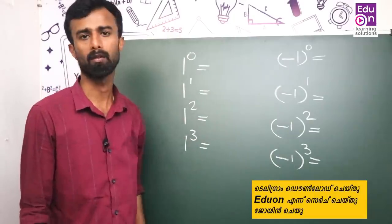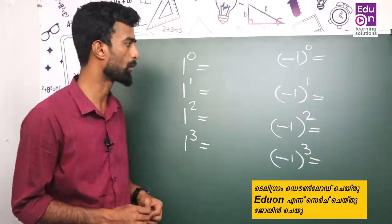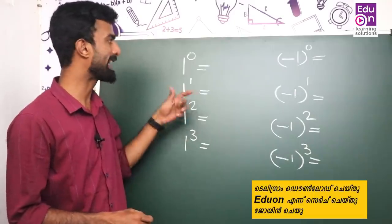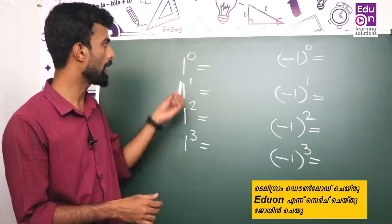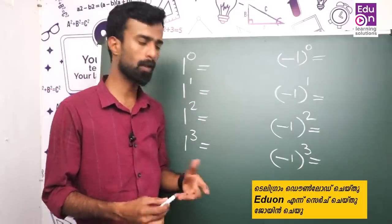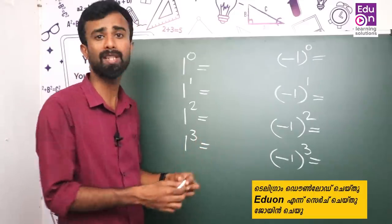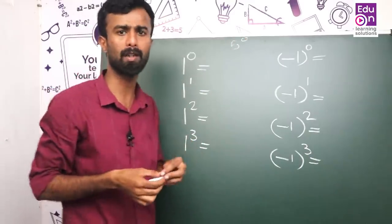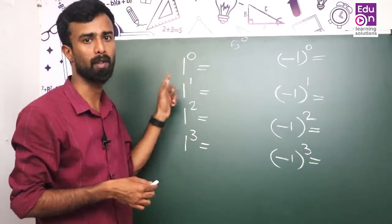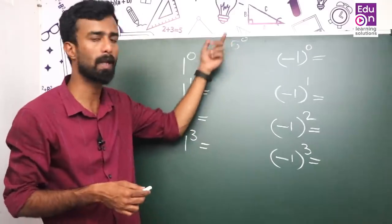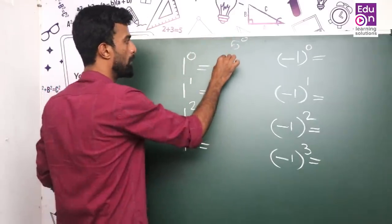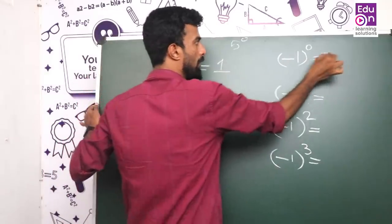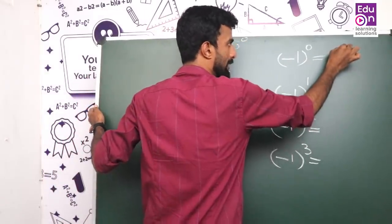I will show you how to use 1 and minus 1. If you have to use plus 1, then 1 plus 1 plus minus 1. If you want to use zero as the exponent, you will use 1 raised to 0 and minus 1 raised to 0. I will show you how to use 5 raised to 0. Here, 5 is equal to the top — any number raised to 0 equals 1.